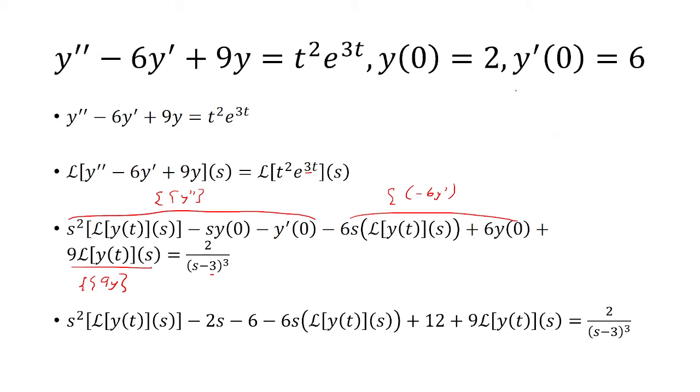Now we can plug in the initial condition. So y of 0 is 2, so this becomes 2s. y prime of 0 is 6, so this becomes 6. So y of 0 is 2, so 6 times 2 is 12. So we replace that on the bottom here.